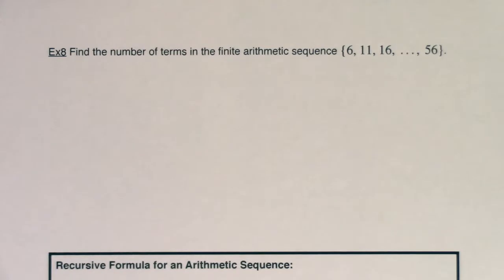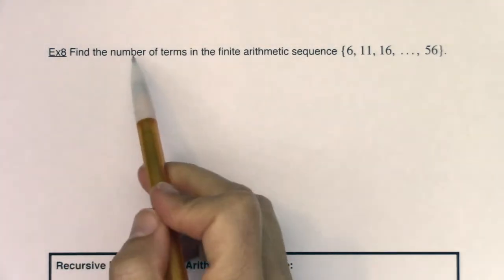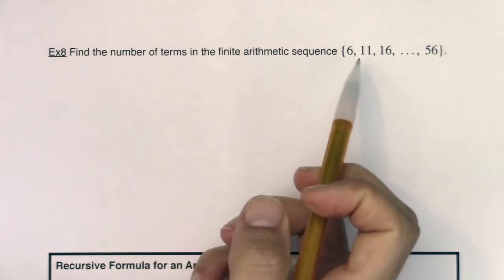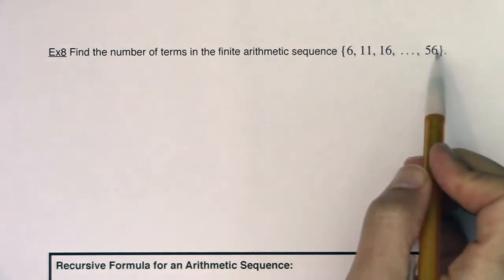Hey Math 31, welcome back to example 8. In example 8 we're being asked to find the number of terms in the finite arithmetic sequence 6, 11, 16, up to 56.